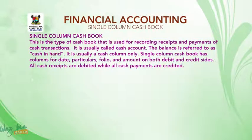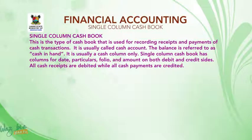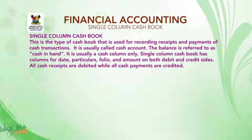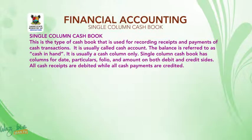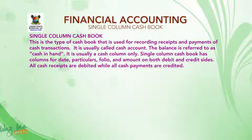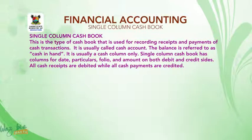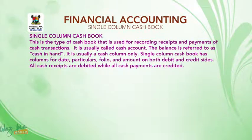Single-column cashbook is the type of cashbook that is used for recording receipts and payments of cash transactions. It is usually called cash account. The balance is referred to as cash in hand. It is usually a cash column only. Single-column cashbook has columns for date, particulars, folio, and amount on both the debit and credit sides. All cash receipts are debited while all cash payments are credited.